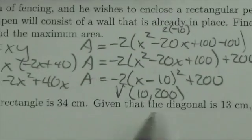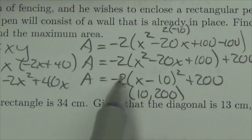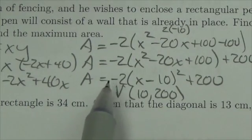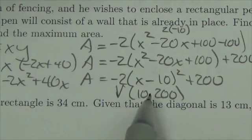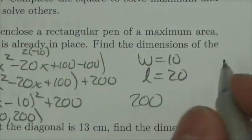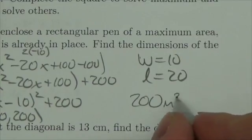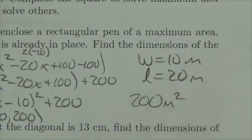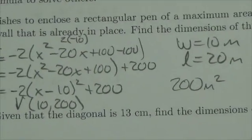And then when it asks for the maximum area, well remember that the vertex here, this parabola opens down. I can tell because it's negative up front, it opens down. So this vertex is a maximum, which means the 200 must be the maximum area. So 200, in this case, meters squared.